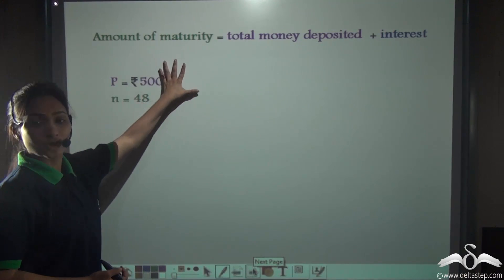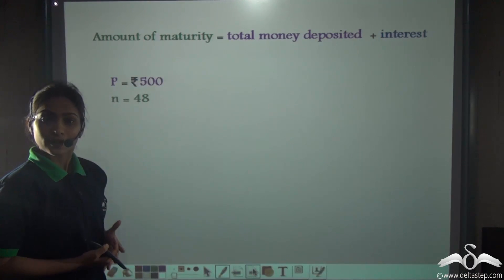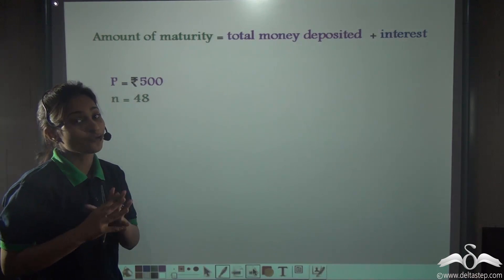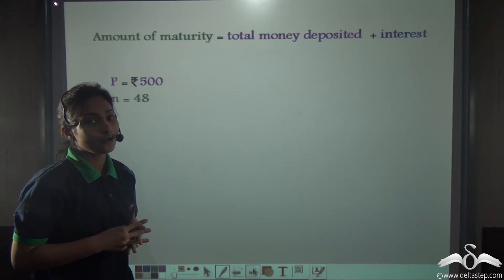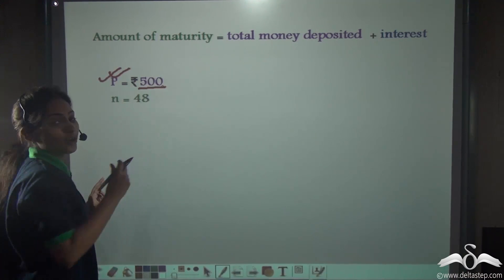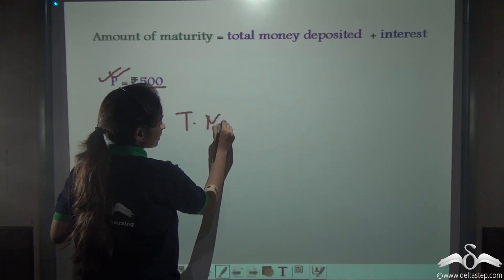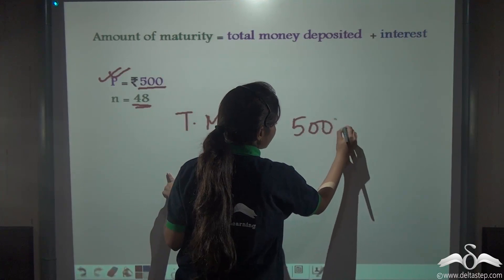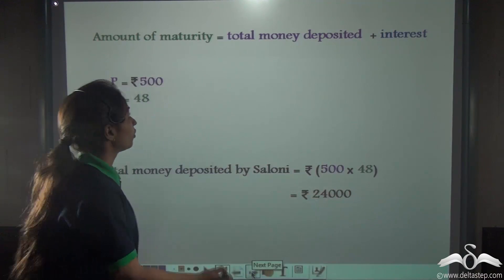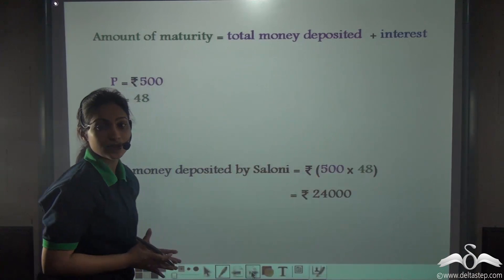Now, you know that amount of maturity can be calculated by adding the total money deposited and the interest. We have been given the amount of maturity in the sum — that was Rs. 28,410 — and we have already calculated the interest, which was 490R. The total money deposited: per month she was depositing Rs. 500 for 48 months, so multiplying gives us total money deposited = 500 × 48 = Rs. 24,000. So now we know: amount of maturity is Rs. 28,410, total money deposited is Rs. 24,000, and interest is 490R.